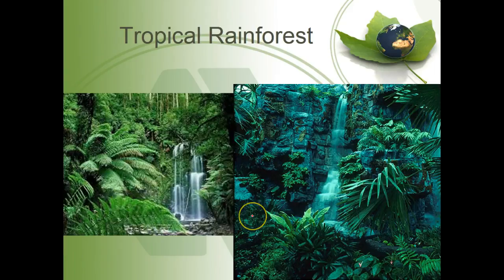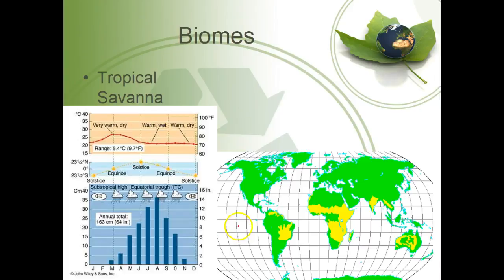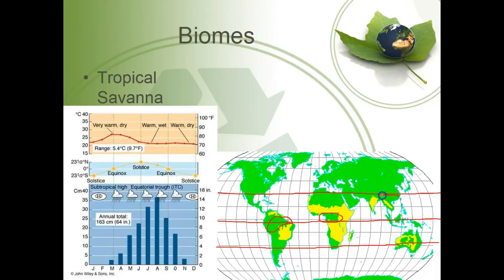Tropical savanna is still within the tropics — 99% of it falls between 23.5 degrees north and 23.5 degrees south — but it's in the drier regions. This would be basically Brazil for the rainforest, and all of these drier areas are more of a grassland. When you think of Africa, this is typically what you think about. You have very warm temperatures year-round, but you get only one rainy season. Without year-round rainfall, you can't support big deciduous tree forests — you can only support sparse trees and savanna grasslands.